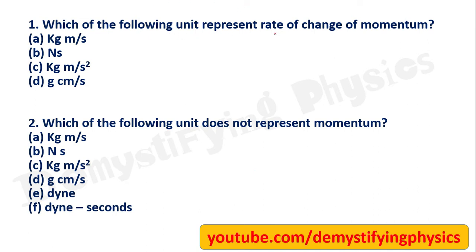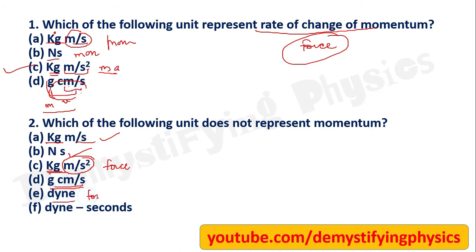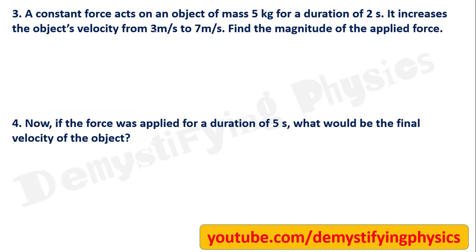Which of the following units represents the rate of change of momentum? And which does not represent momentum? Mass times velocity is momentum. Dyne·second is force × time, so it is also momentum. Pure dyne (force) is not momentum. The answers are C and E, which are force units — the rest are momentum units.